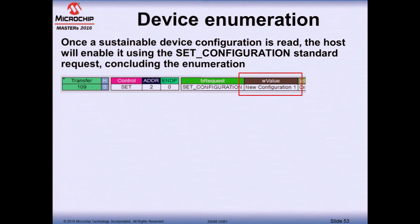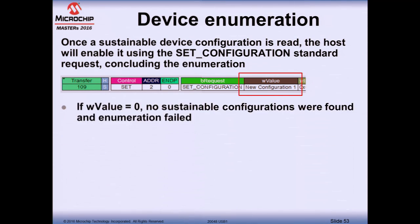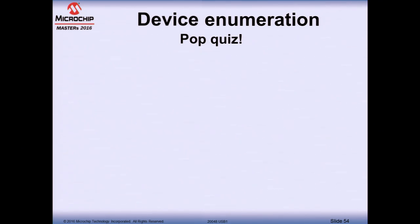Once a sustainable device configuration is found, the host enables it by sending a Set Configuration request, which concludes the enumeration. The packet analyzer tells you which configuration number was selected. If no sustainable configuration is found, you'll see a Set Configuration request with configuration number zero, meaning the host couldn't configure the device — indicating you need to change the device descriptor or design to meet the host's actual capabilities.